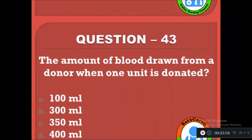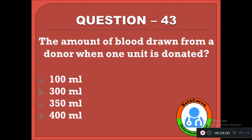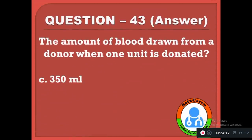Question 43: The amount of blood drawn from a donor when one unit is donated — option A: 100 ml, B: 300 ml, C: 350 ml, D: 400 ml. The correct answer is C, 350 ml is drawn from the donor when they donate blood at a single time, which is one unit.